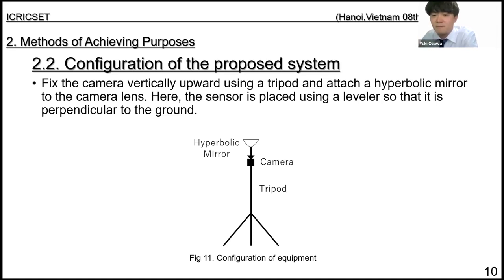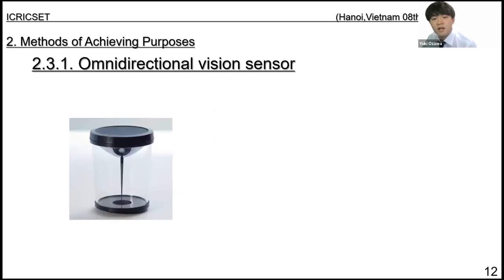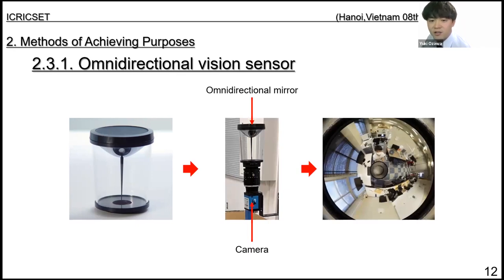The camera is fixed facing upward using a tripod, and a hyperbolic mirror is attached to the camera lens. Our omnidirectional visual sensor is a device that combines a hyperbolic mirror and a camera. By photographing the omnidirectional mirror from directly below, it is possible to take a 360-degree omnidirectional image with a single shot.